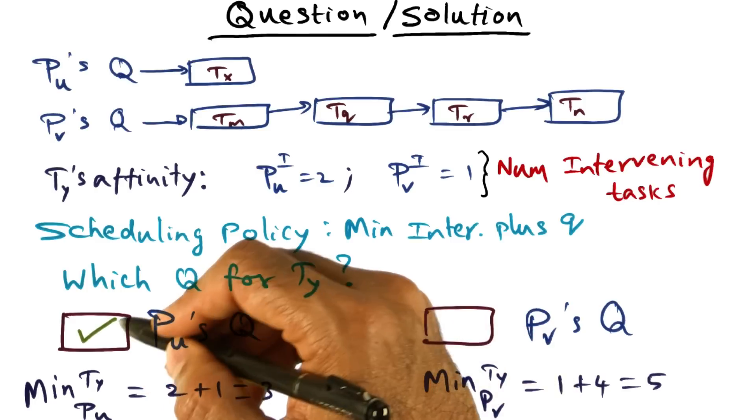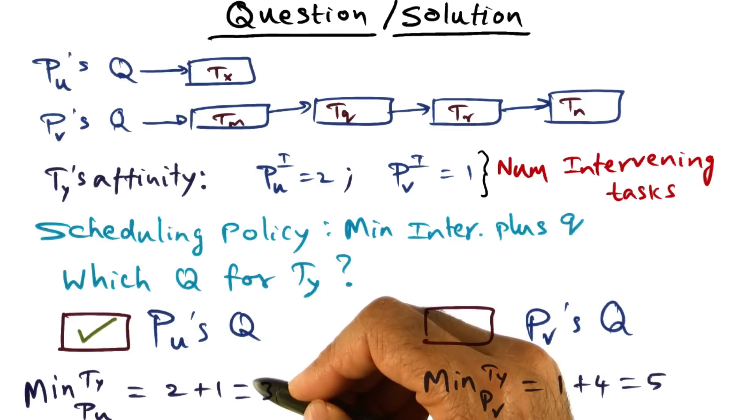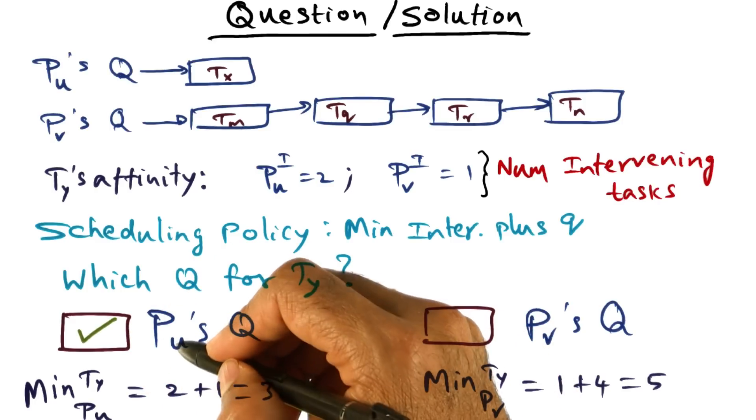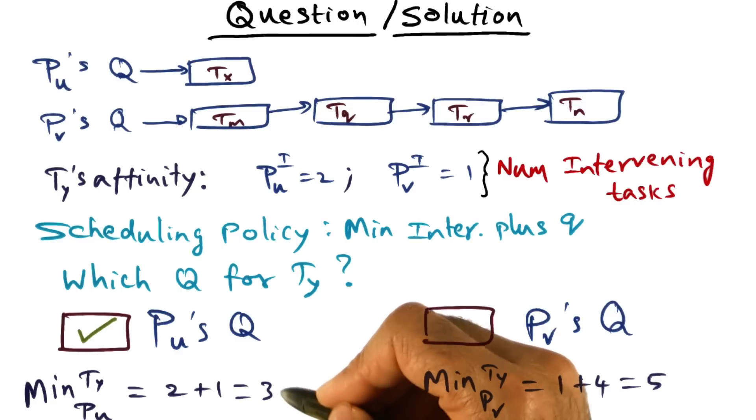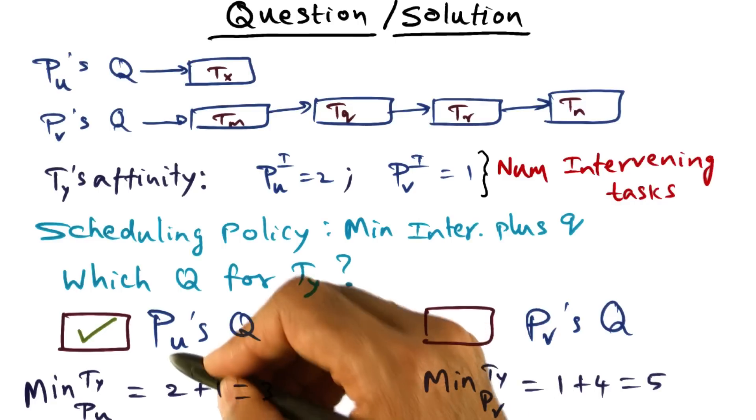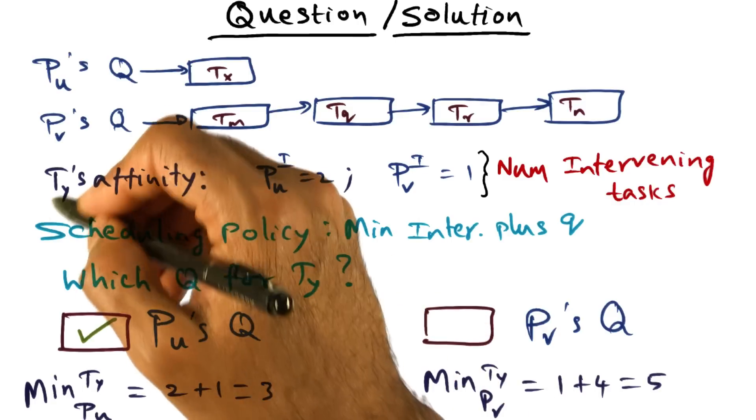Which means that the choice I'm going to make is to put ty on pu because that's the one that will result in the least amount of intervention for polluting the cache of pu with respect to this particular thread ty.